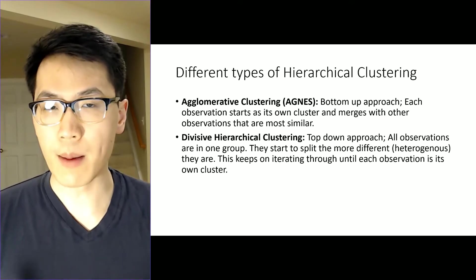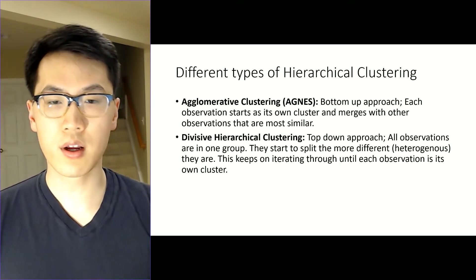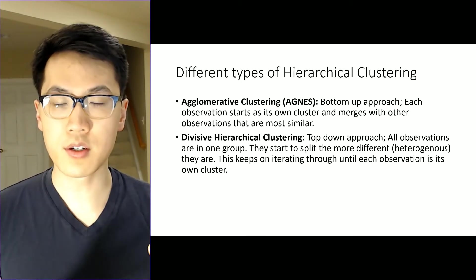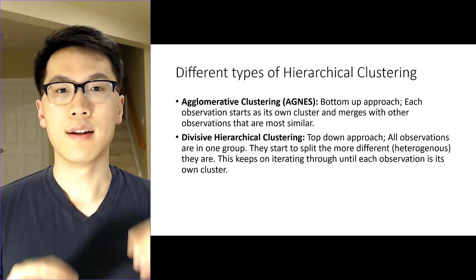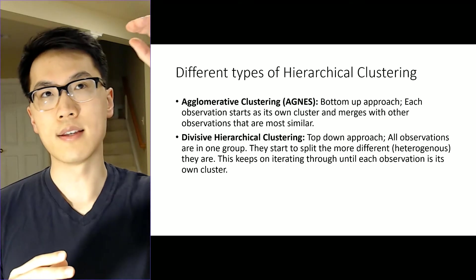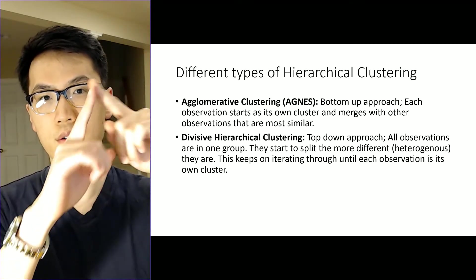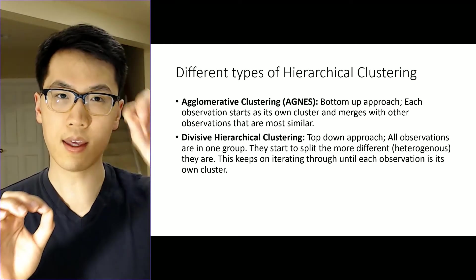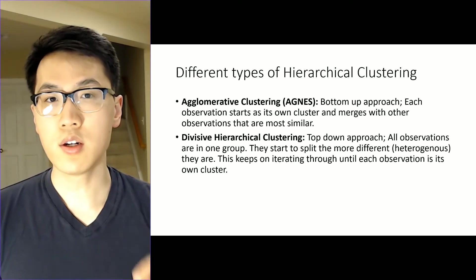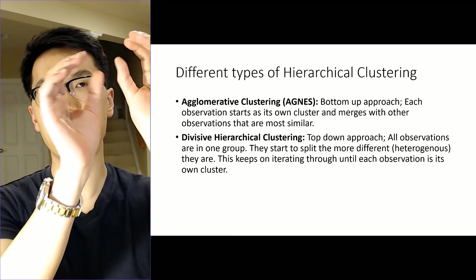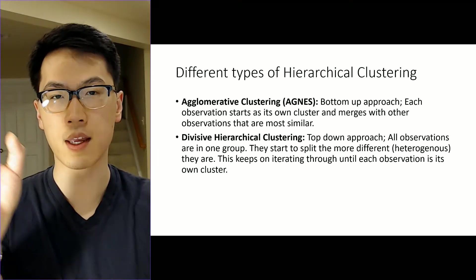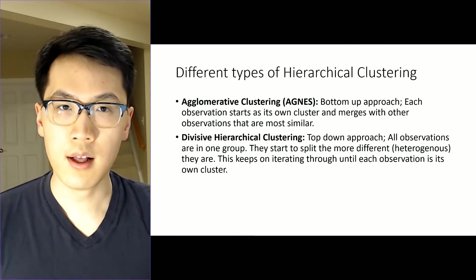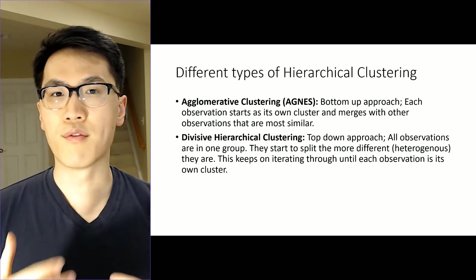The other approach is basically the opposite — it's the divisive hierarchical clustering, where you're going from top to bottom. All observations start off as one cluster, then it will start to branch off. Think of it as a tree where you have branches branching off — you are splitting each individual observation into its own cluster. You get miniature groups, and then from those miniature groups you get even smaller groups, until you just have one observation left within each cluster. Those are the different forms of hierarchical clustering.